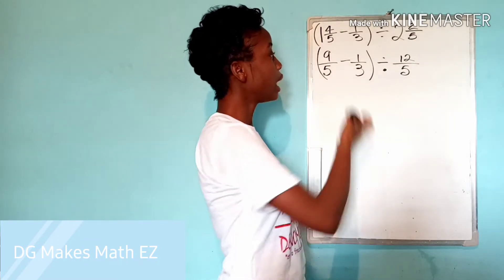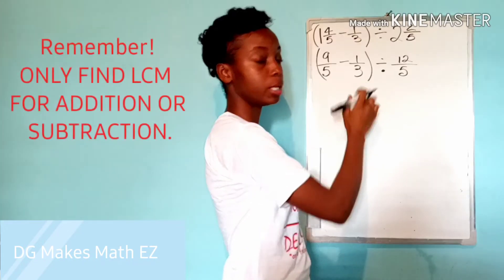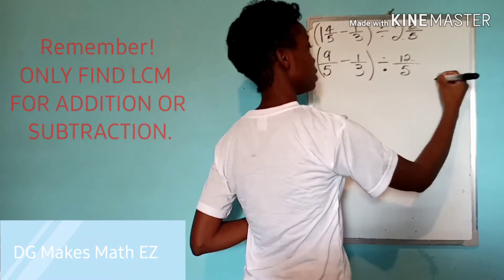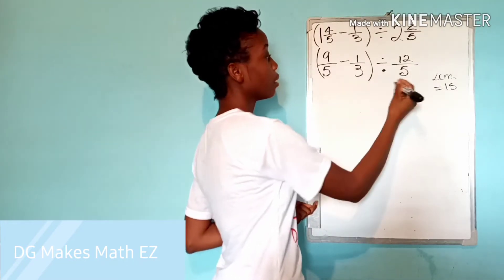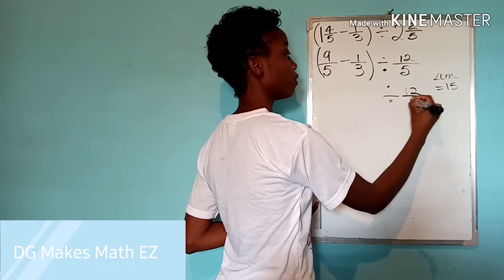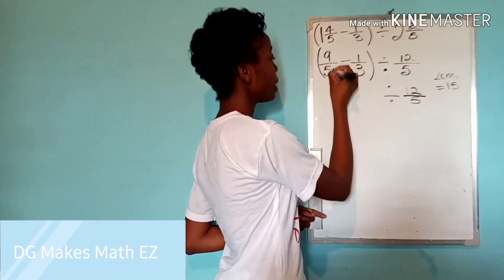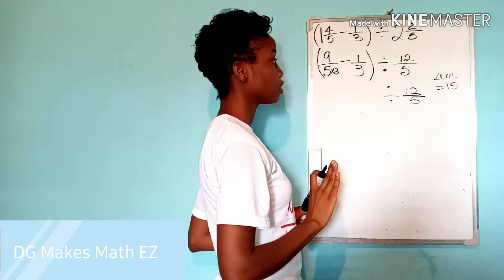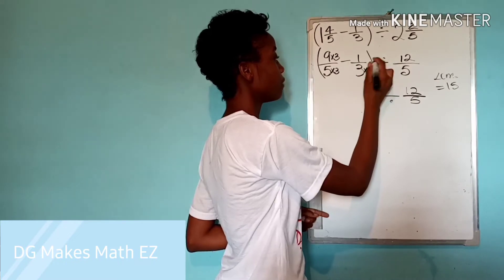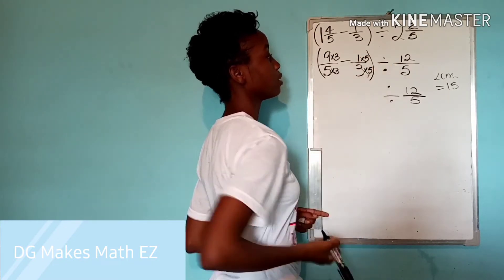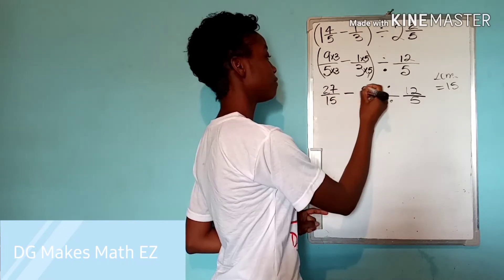And just like we did for the question before, I'm subtracting. And once I'm working with addition or subtraction of fractions, I need to find my LCM for both denominators. The LCM of five and three is 15. And we know that only applies to the subtraction part here. Remember, whatever answer we get here is going to be divided by 12 over five. So we do not touch that 12 over five for now until we are done working this bracket. So we need to turn five into a 15. I do that by multiplying by three. I am creating an equivalent fraction. And so I need to also multiply my numerator by three. To turn three into a 15, I'm going to multiply by five. I do the same to my numerator. So my new fractions here are going to be 27 over 15 minus five over 15.